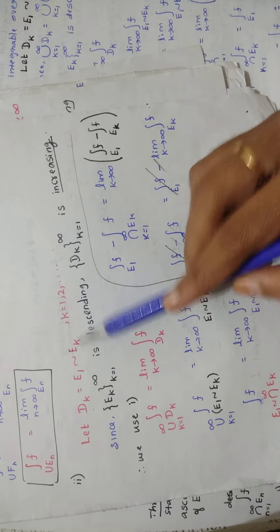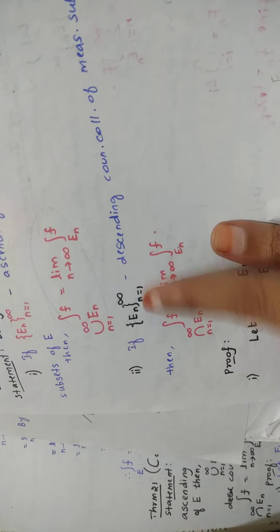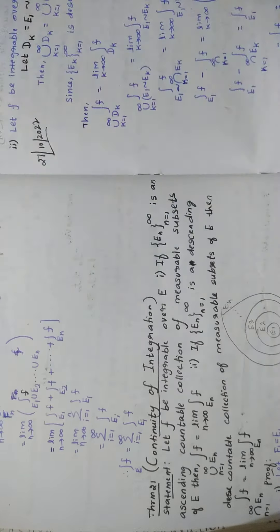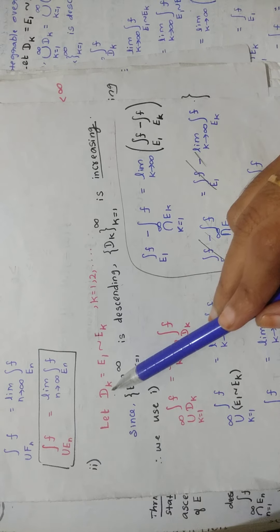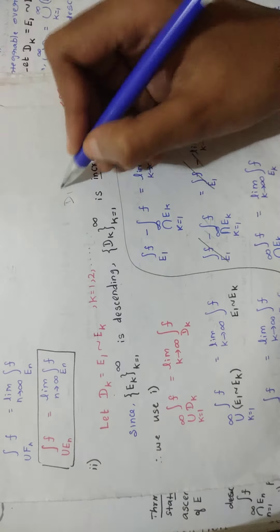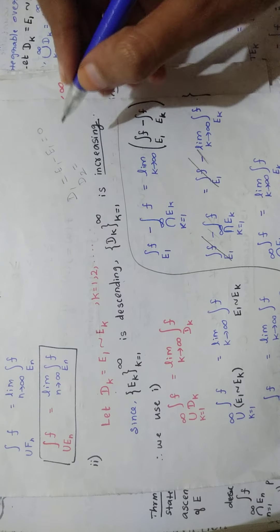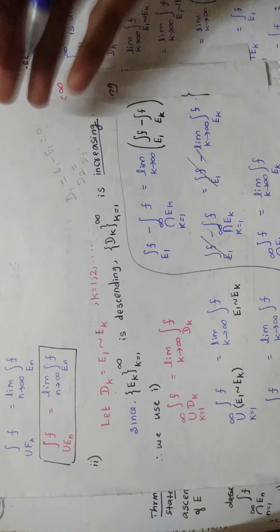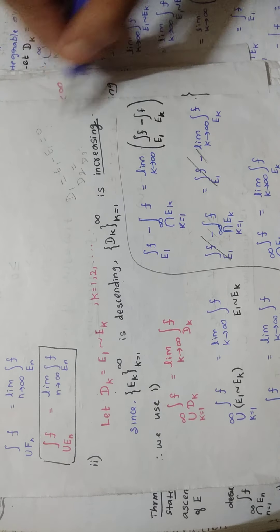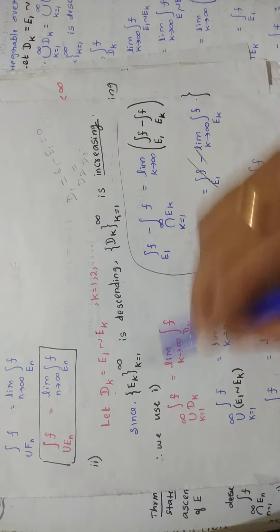So here, define Dk equal to E1 difference Ek, for k equal to 1, 2, etc. Now, Ek is descending as given in the second part of the statement. When Ek is descending, the values Dk will keep on increasing — for D1 you get E1 minus E1 which is 0, then D2, D3 give increasing values. So the collection Dk is ascending or increasing.